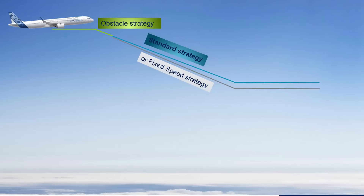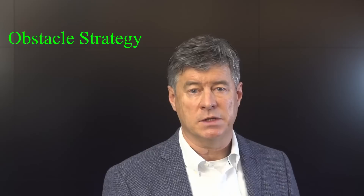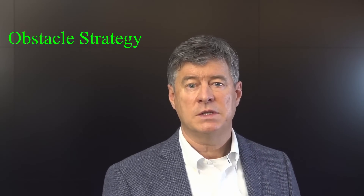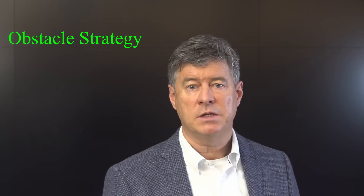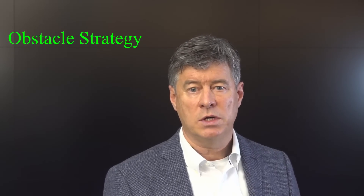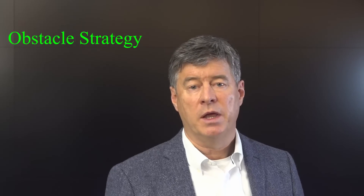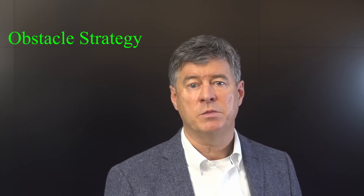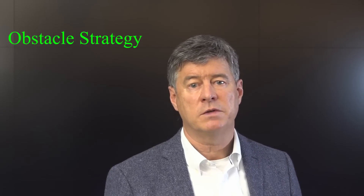The combination of strategies may be defined through the airline's policy. If you encounter an engine failure over a mountainous area, you should apply the obstacle strategy. This strategy consists of descending at green dot speed until you clear the obstacle or until you reach the drift down ceiling. The green dot speed corresponds to the best lift-to-drag ratio speed where aerodynamic efficiency is maximum. Therefore, the obstacle strategy enables minimizing the altitude loss versus the distance covered.